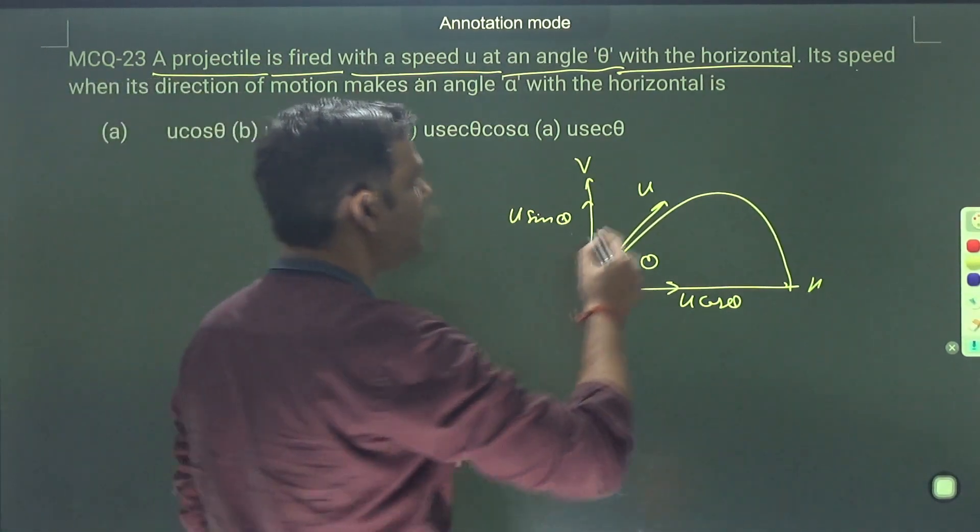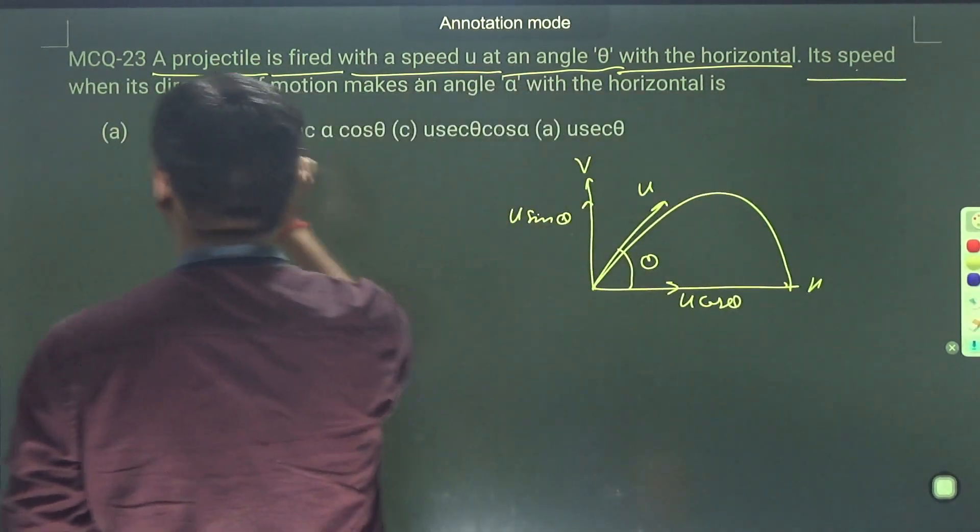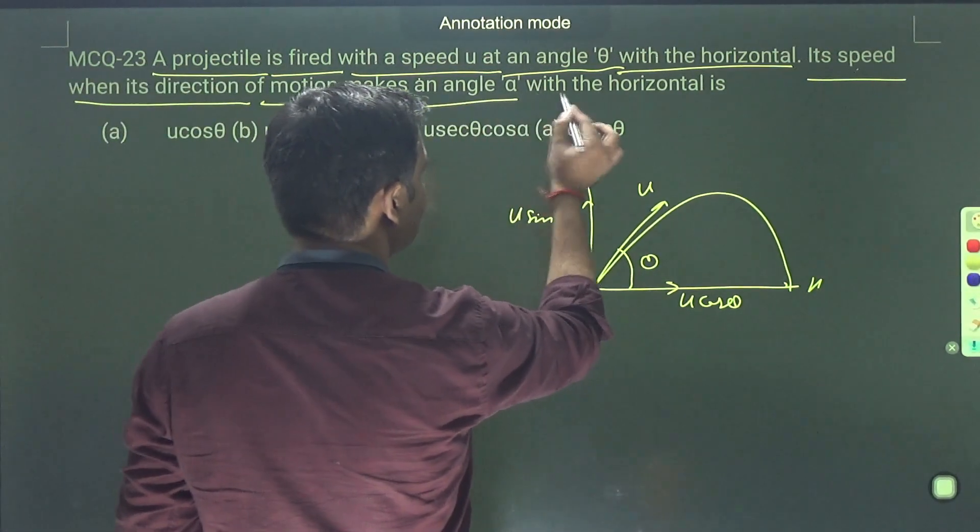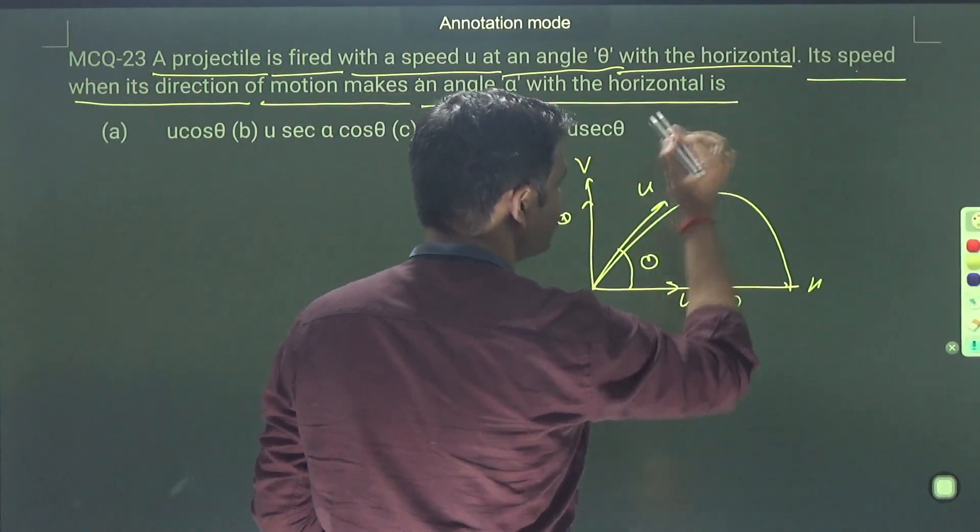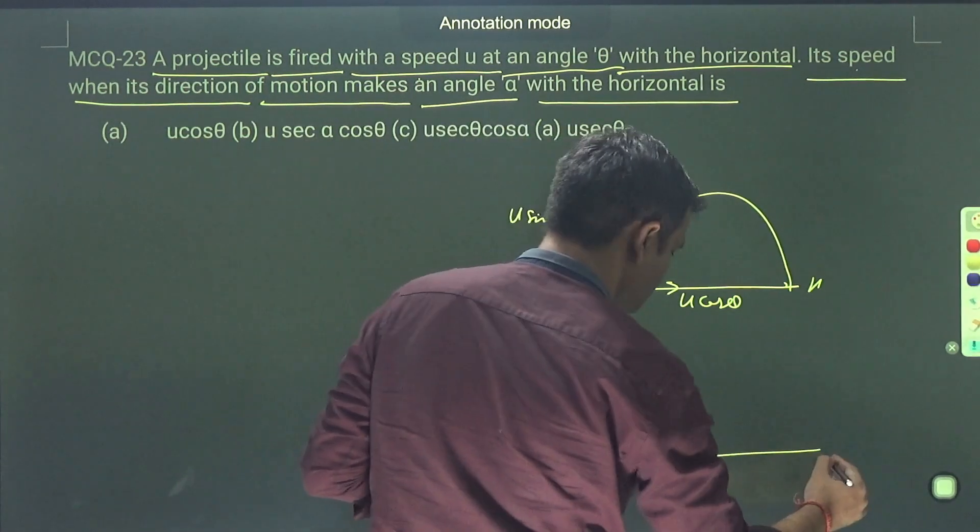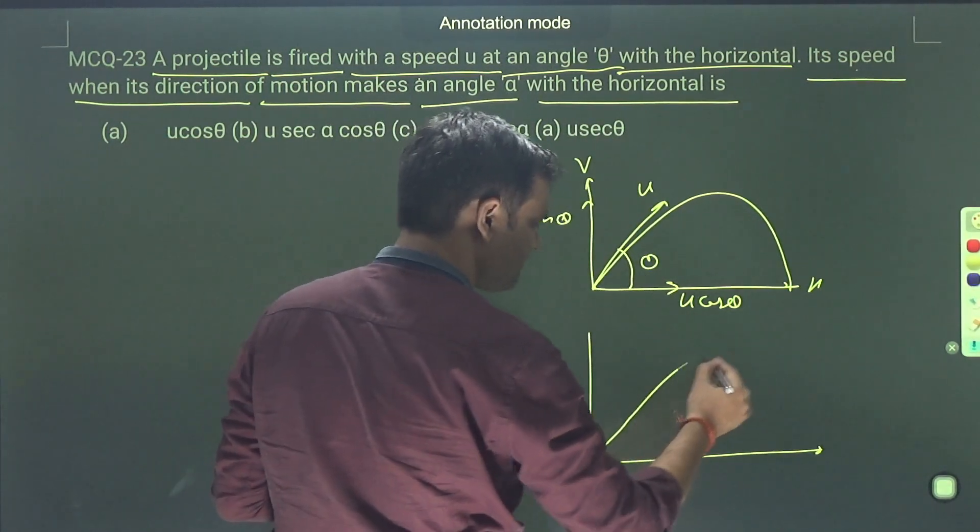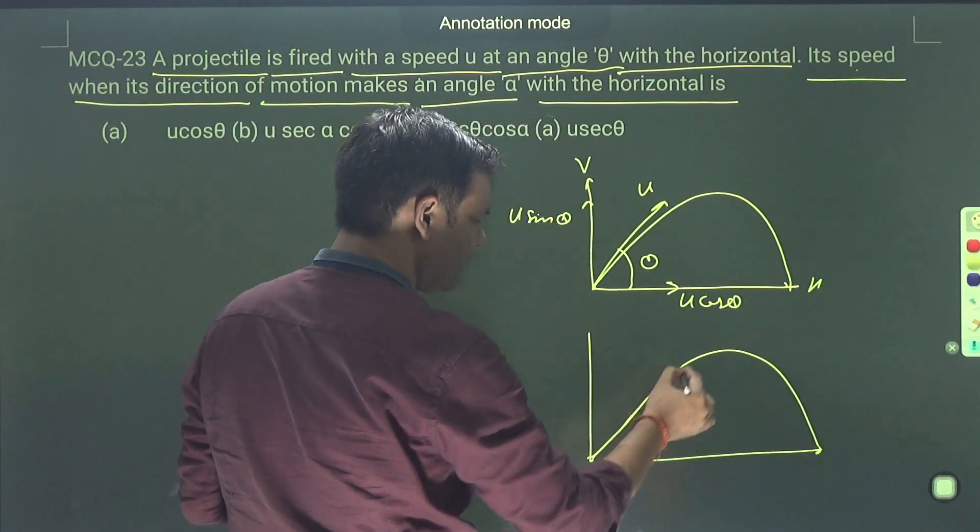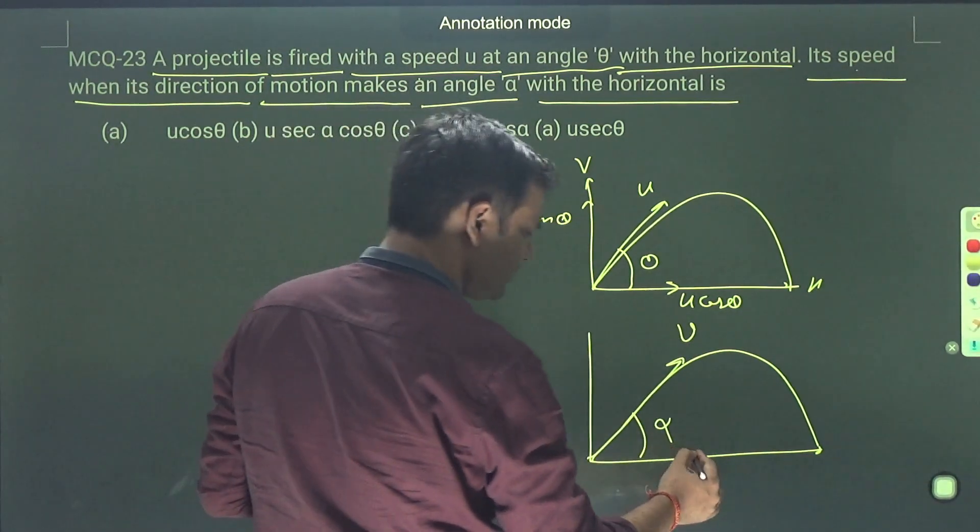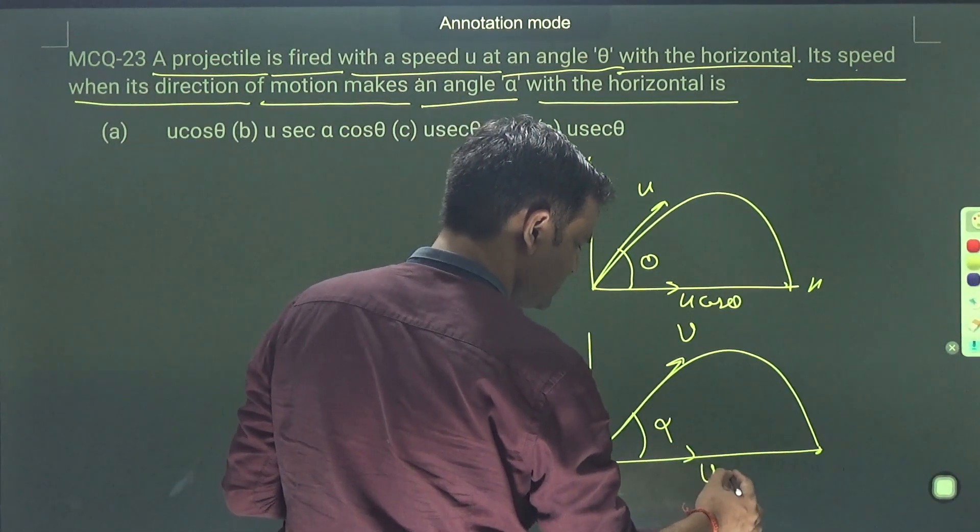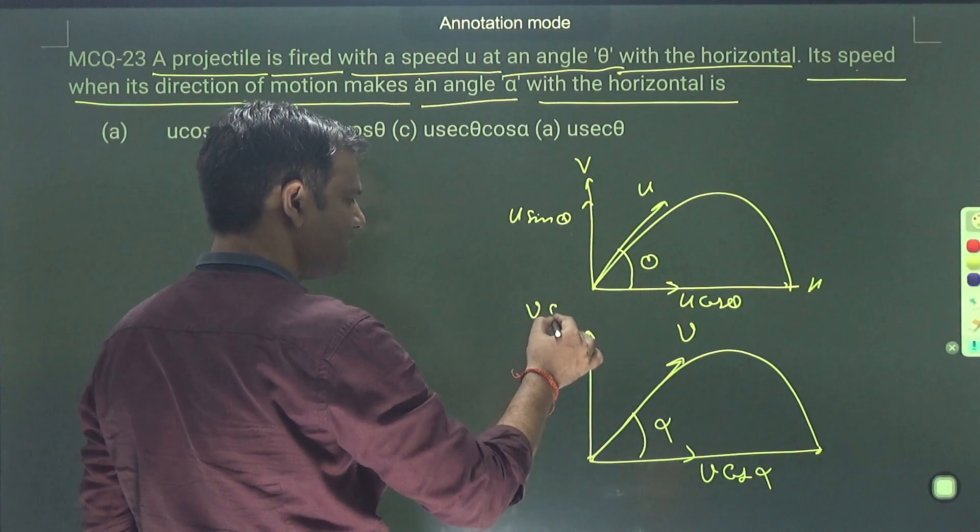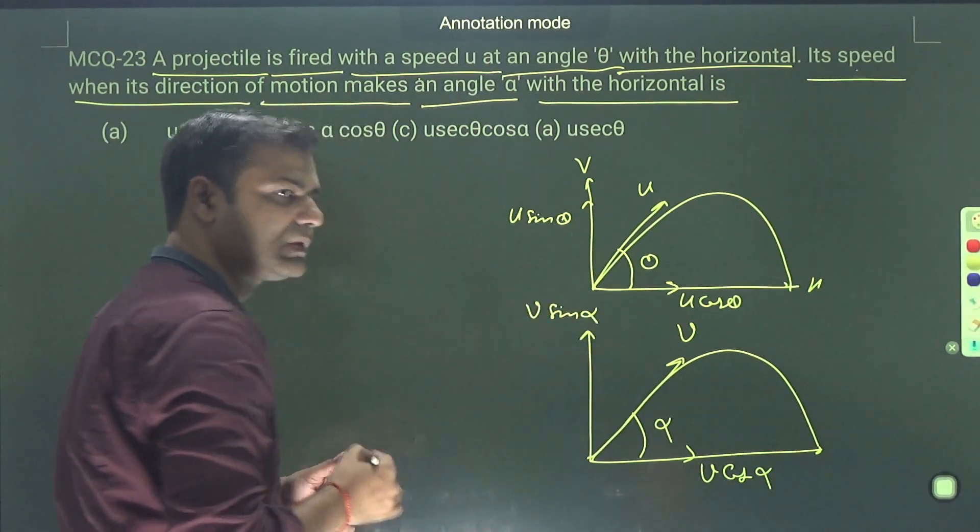Next part. Its speed when its direction of motion makes an angle alpha with horizontal is, suppose that a speed v. How much angle? This one is alpha given. So v cos alpha, here v sin alpha.